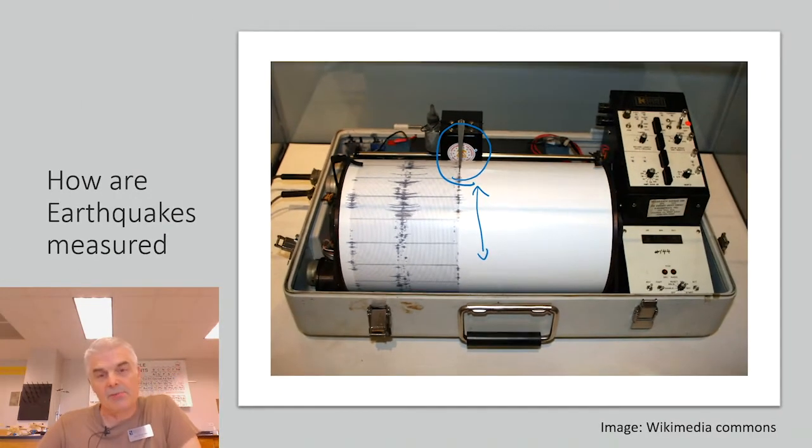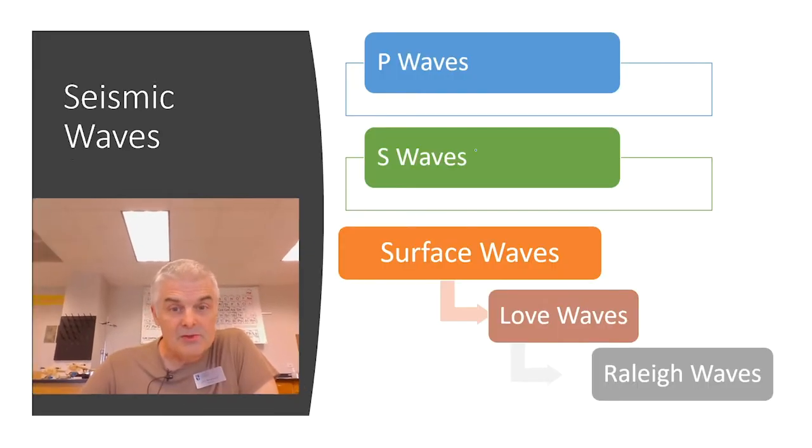They have seismometers all over the world, and they're measuring and waiting for the ground to shake. And it turns out it shakes all the time. There's earthquakes happening, I'm sure, as I speak right now, as you're watching this. Most of them are small, minor earthquakes. But, of course, the ones that get the press are the ones that are big earthquakes. And we'll talk about magnitude and how big they are.